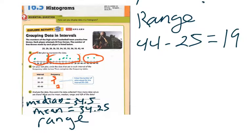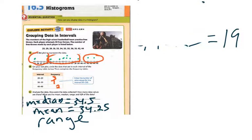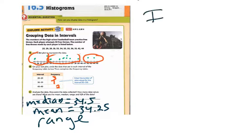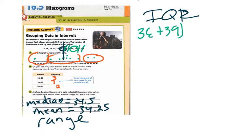Now for the interquartile range — do you remember what that means? You should be thinking about the range of your box plots. The interquartile range is your upper median subtracted from — your upper median minus your lower median. Our median splits the data in half, so now I find the median of the upper half. That's 36 plus 39 divided by 2, giving me an upper quartile of 37.5.